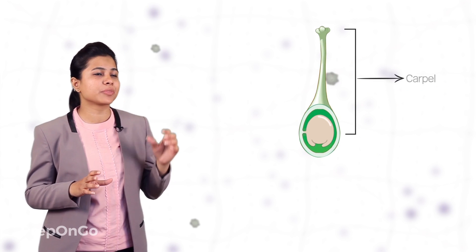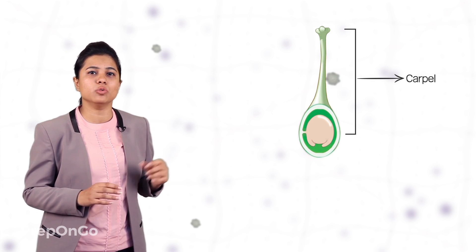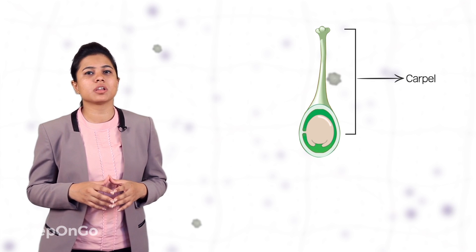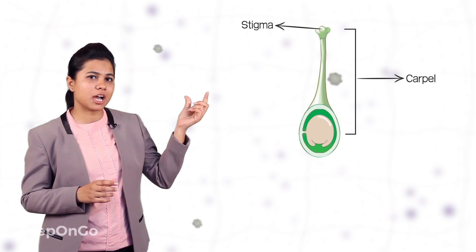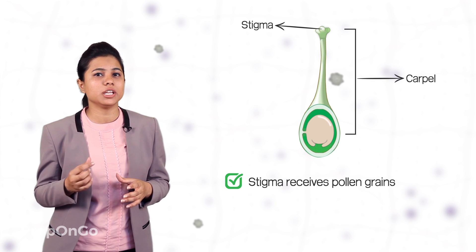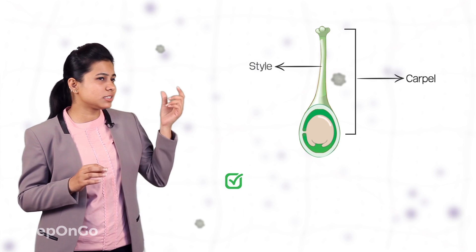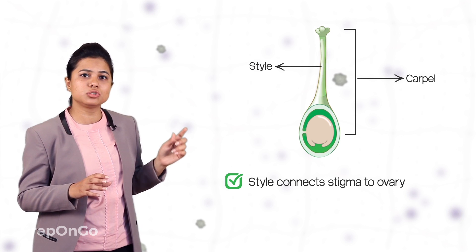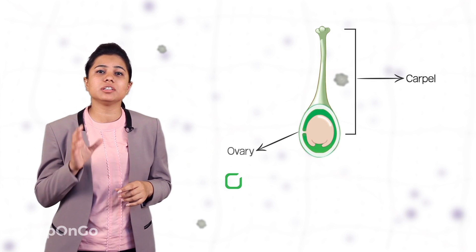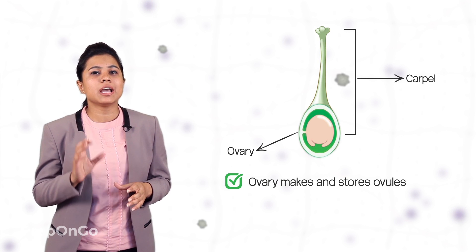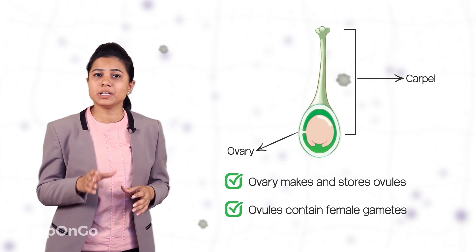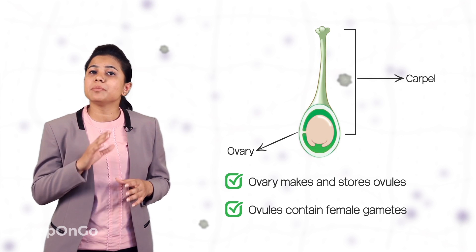Now let's study the female reproductive part. The flower-shaped structure present in the center of the flower is the female reproductive organ, called the carpel or pistil. It has three parts: stigma, style, and ovary. The stigma is present at the top of the carpel and is responsible for receiving the pollen from the anther; it is sticky in nature so that the pollen grains can stick to it. The style is a tube-like structure which connects the stigma to the ovary. The ovary is responsible for making ovules and storing them, and these ovules consist of the female sex cells or female gametes. There are many ovules in the ovary.